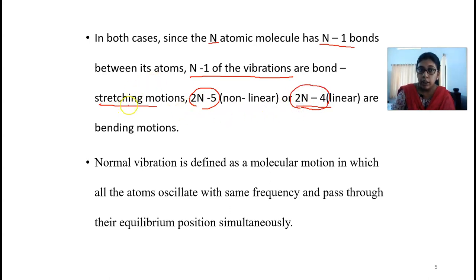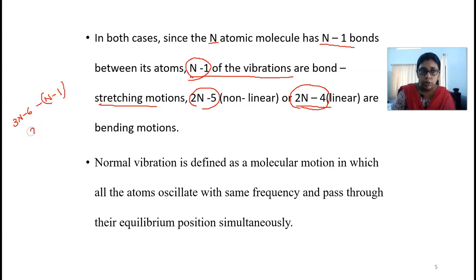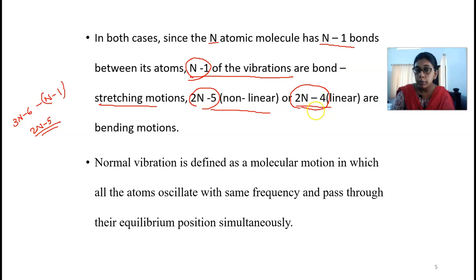For a molecule with N atoms connected by N minus 1 bonds, there are N minus 1 bond stretching motions. The bending motions will be 2N minus 5 for a non-linear molecule and 2N minus 4 for a linear molecule.